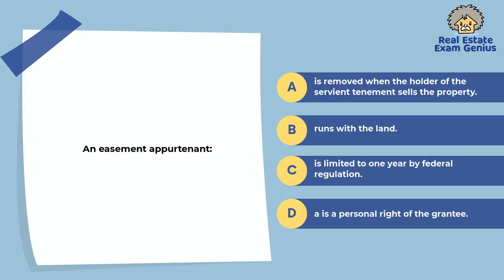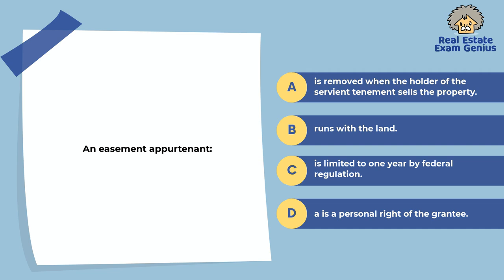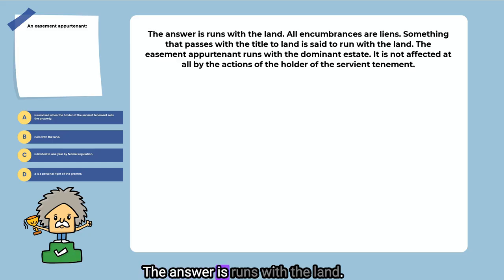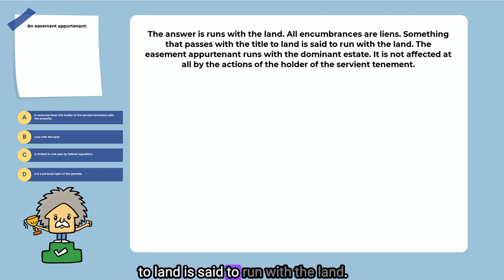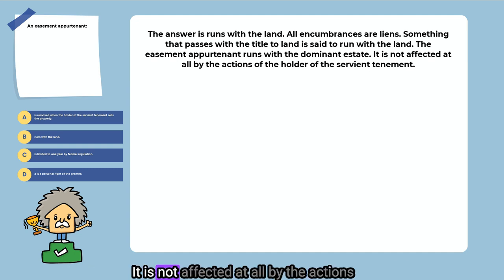An easement appurtenant: is removed when the holder of the servient tenement sells the property, runs with the land, is limited to one year by federal regulation, or is a personal right of the grantee. The answer is runs with the land. Something that passes with the title to land is said to run with the land. The easement appurtenant runs with the dominant estate and is not affected at all by the actions of the holder of the servient tenement.